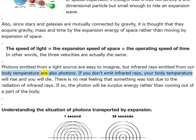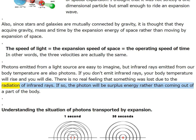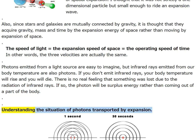Photons emitted from a light source are easy to imagine, but infrared rays emitted from our body temperature are also photons. If you don't emit infrared rays, your body temperature will rise and you will die. The photon will be surplus energy rather than coming out of a part of the body. Understanding the situation of photons transported by expansion.